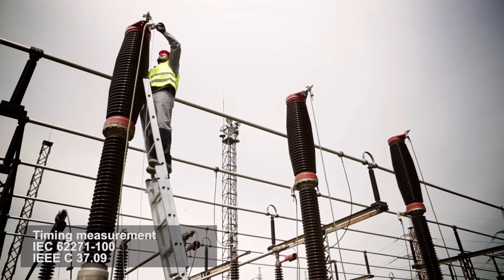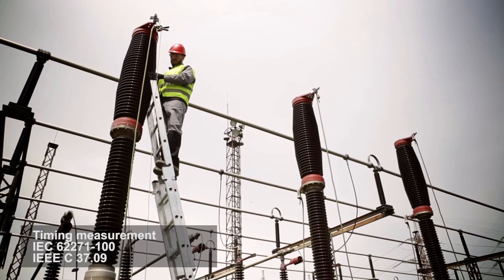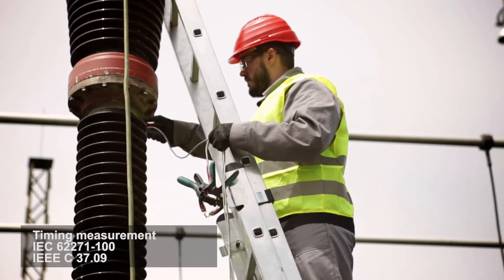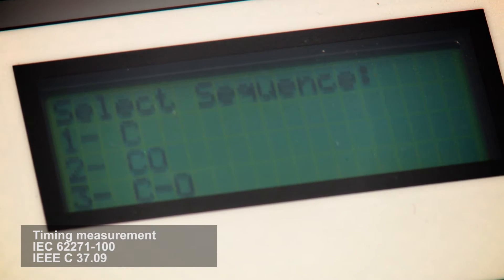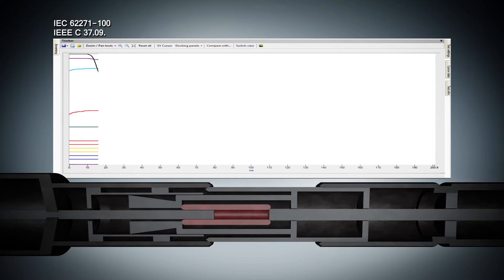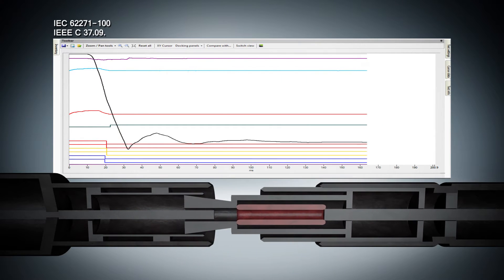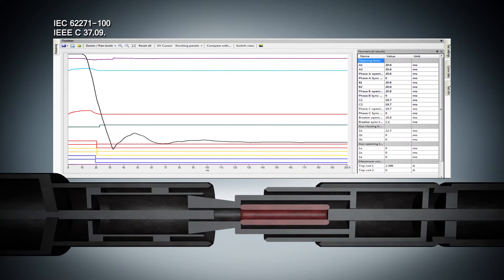The timing measurement of the mechanical operations is one of the most important tests to determine the real condition of the circuit breaker. Measured values are compared with limits specified by the manufacturer. Timing measurement tests fulfill all the requirements defined by IEC and IEEE standards.